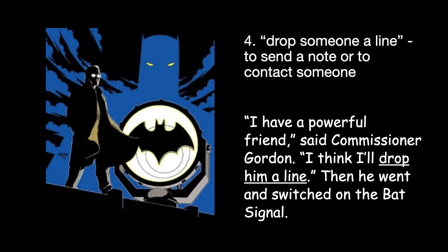In this sentence, Commissioner Gordon is very angry with the Joker, so he says: I have a powerful friend, I think I will drop him a line. In the Batman comics and movies, usually when somebody needs Batman's help, they switch on a huge light — the bat signal — and the symbol of the bat is reflected in the night sky, and Batman comes to help. So Commissioner Gordon is threatening the Joker by saying: if I drop my friend a line, he will come and help me.